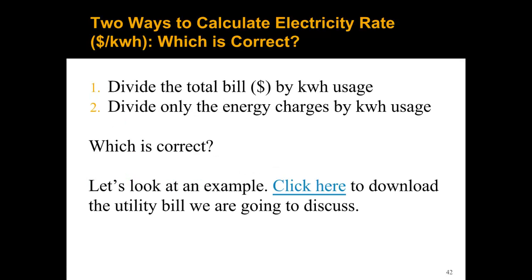Let's talk about two ways to calculate electricity rates and which is correct. There are two separate ways we could calculate the dollar per kilowatt hour: we could take the total electricity bill and divide by the kilowatt hour usage, or we could divide only the energy charges by the kilowatt hour usage.